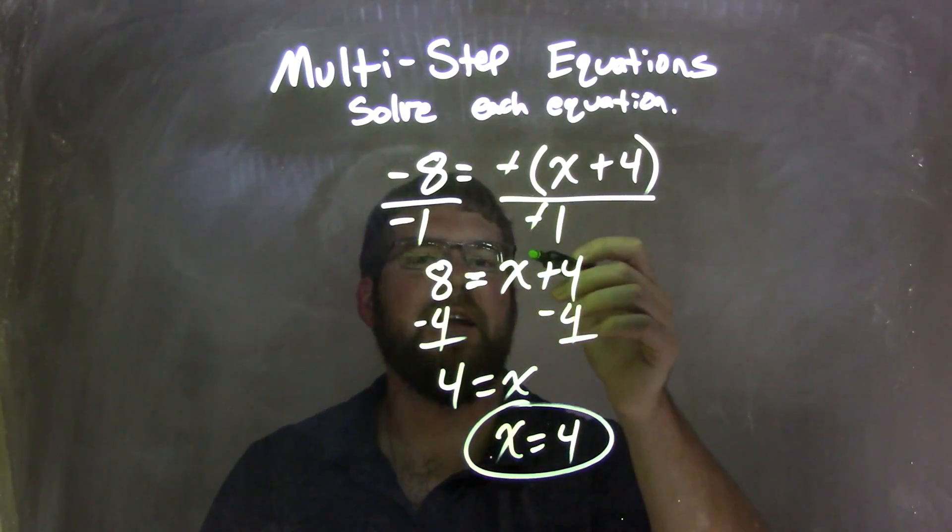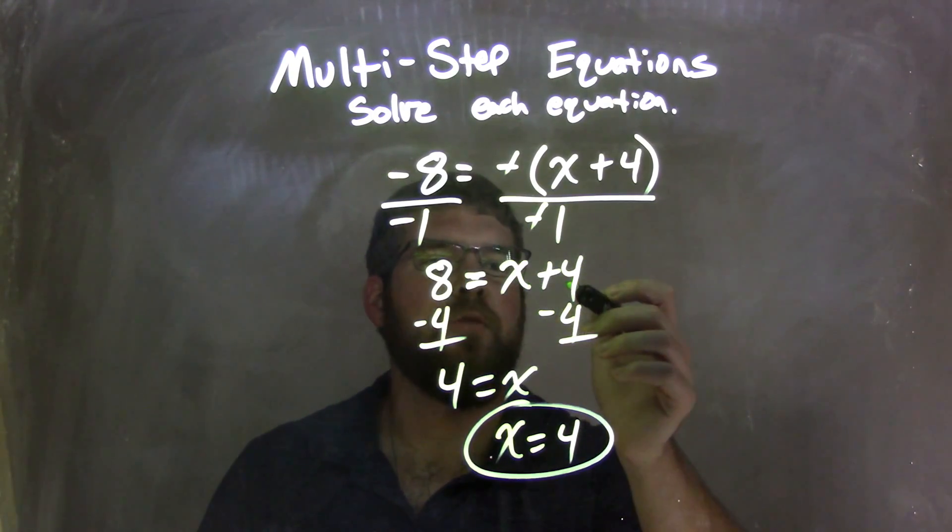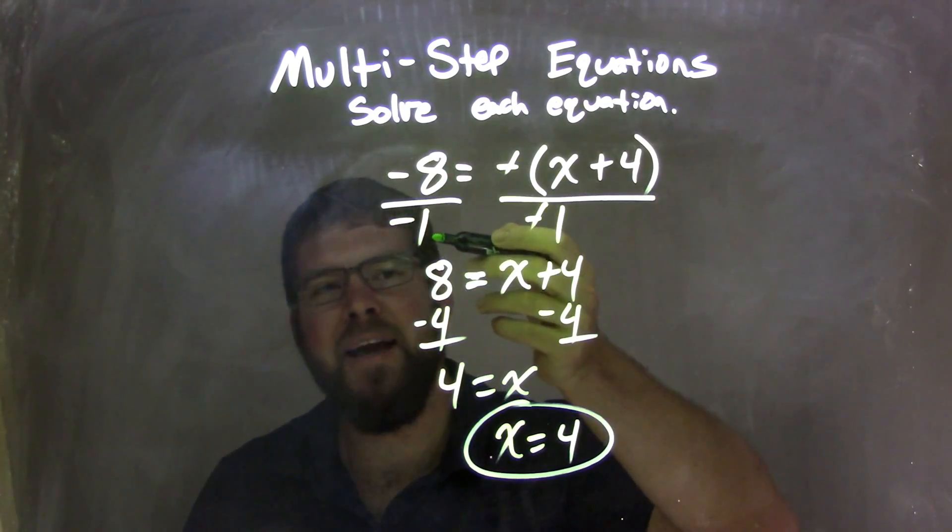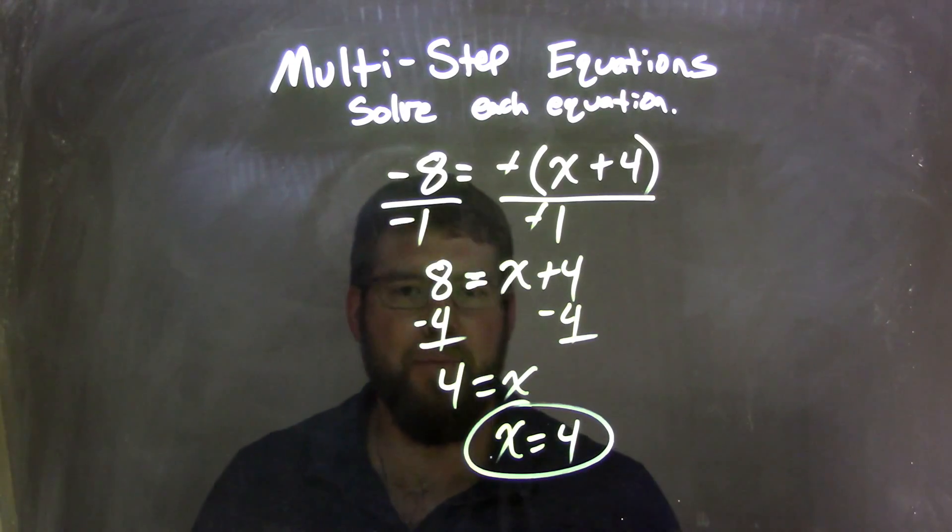That got rid of my negative here, and so we have x plus 4 on the right, and negative 8 divided by negative 1 is a positive 8. Fantastic, I prefer positive numbers.